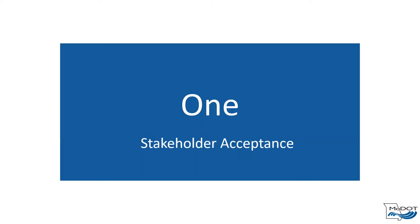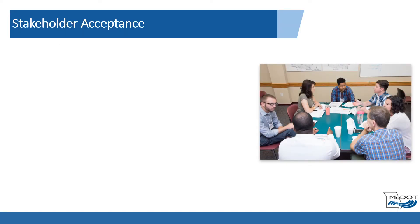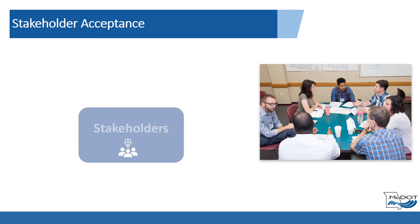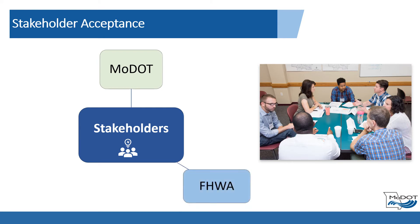Section 1 of the Methods and Assumptions report template is Stakeholder Acceptance. This section will document the project stakeholders that were consulted and made aware of the plan of work set forth in the Methods and Assumptions report for the project. Project stakeholders typically include a MoDOT representative, FHWA representative, and county or municipal representative. Stakeholders from other agencies and groups may be added as appropriate.